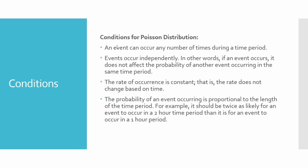And the probability of an event occurring is proportional to the length of the time period. For example, if the probability of an event occurring in an hour is x, then the probability of the same event occurring in two hours should be twice, that means 2x.